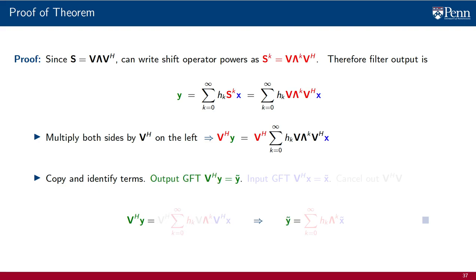The product V Hermitian times y is nothing but the GFT of the output signal. The product V Hermitian times x is nothing but the GFT of the input signal. Among the remaining terms, look at the ones involving V Hermitian and V. These terms cancel out because V Hermitian times V is an identity. We are left with the terms in red that we copy to the right side. This is the result that we wanted to prove.